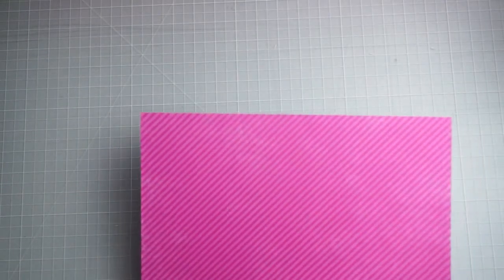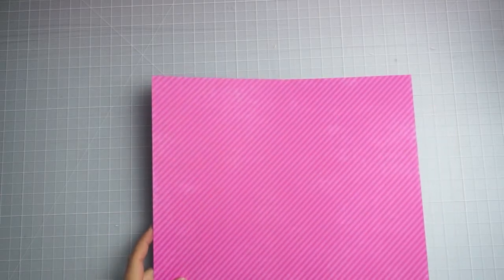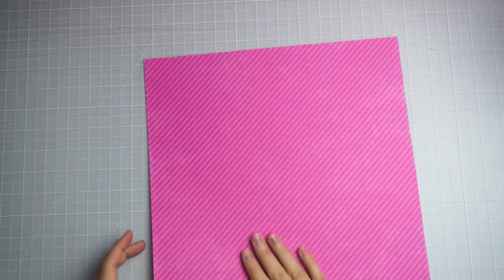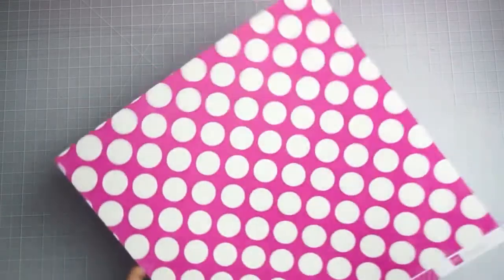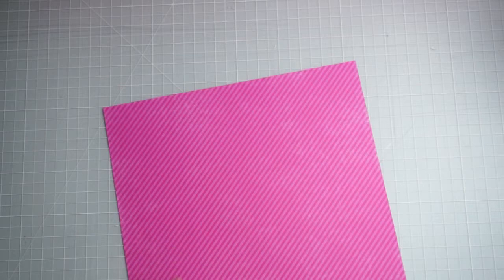First you're going to need a piece of paper for your cover. You can use just craft paper, whatever kind of paper you want. I have this Echo Park dots and stripes paper that's been in my stash for a long time. It's one of my favorite everyday patterns. It's got the stripes and the polka dots. So I'm going to cover mine with the stripe side.